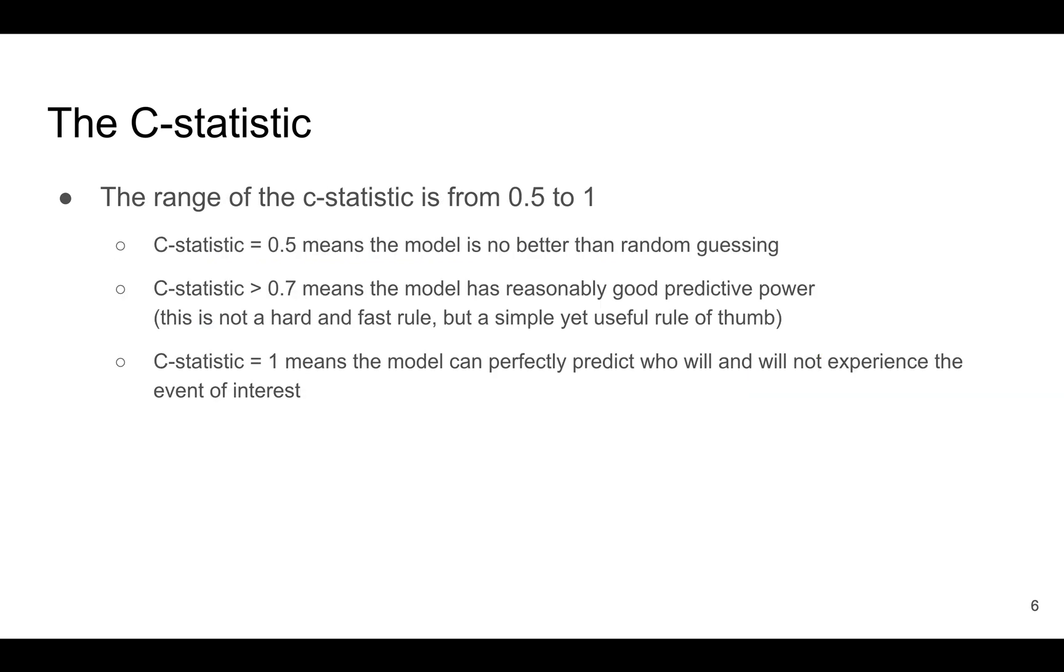The C statistic ranges from 0.5 to 1. If the C statistic is 0.5, it means that the model is basically equivalent to kind of a random guess. As a rule of thumb, a C statistic of about 0.7 or greater means the model has reasonably good predictive power. But this is not like a hard and fast rule.